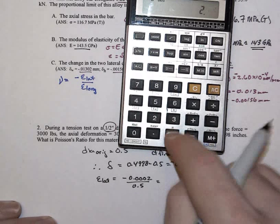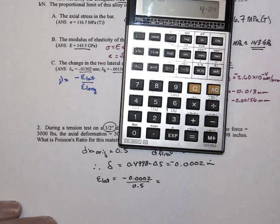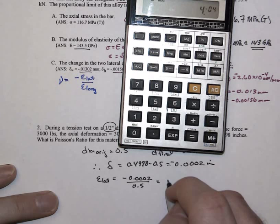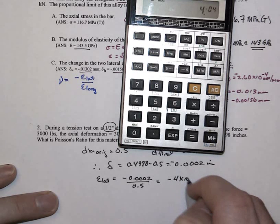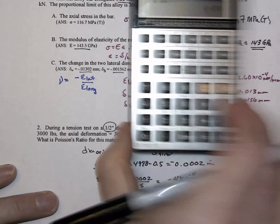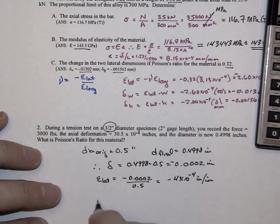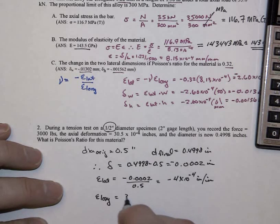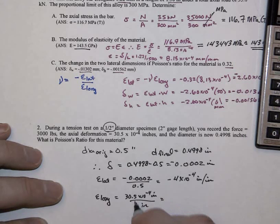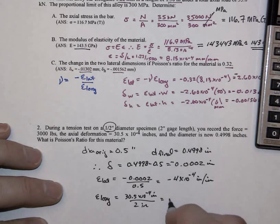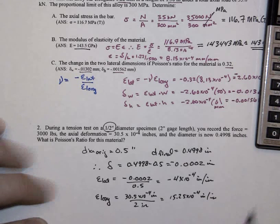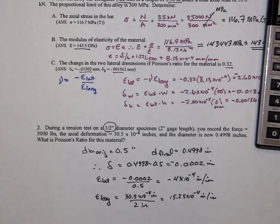So the lateral strain will be minus 0.0002 divided by the original diameter of 0.5. That's going to be minus 2E-4 divided by 0.5. And did I really need to do that on a calculator? No, but I did anyways. Minus 4 times 10 to the minus 4th inches of deformation per original inch of length. And then we have the longitudinal strain being given by its axial deformation divided by its original length, 30.5 times 10 to the minus 4th inches over 2 inches, that gauge length. So 30.5 divided by 2 is going to be 15.25 times 10 to the minus 4th inch per inch.